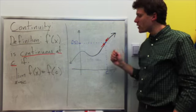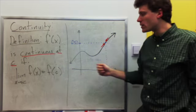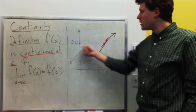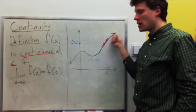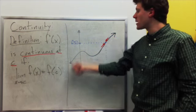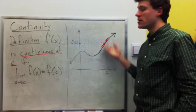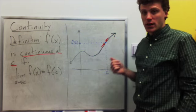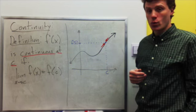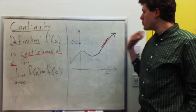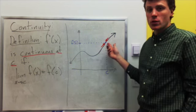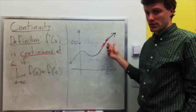What this is saying intuitively is that I can draw this picture — the graph of this function — without picking up my marker, or your pencil, pen, whatever. Basically, the function is equal to what it looks like it's going to.